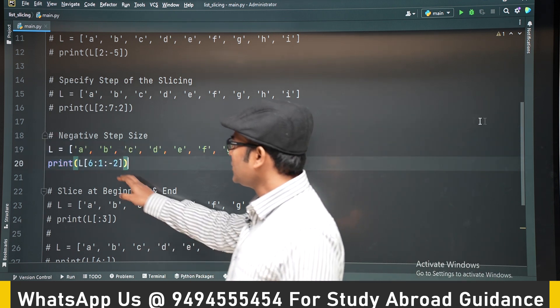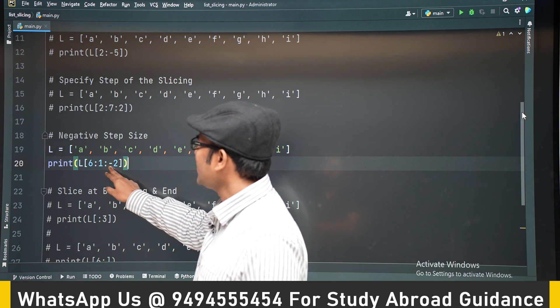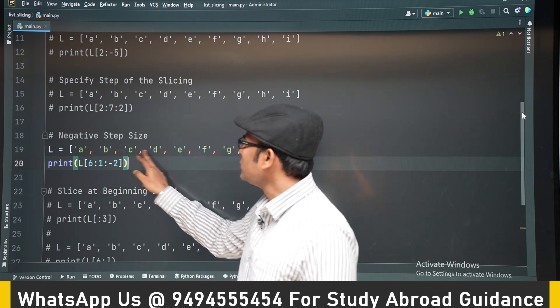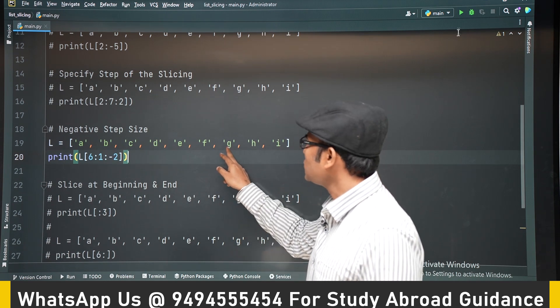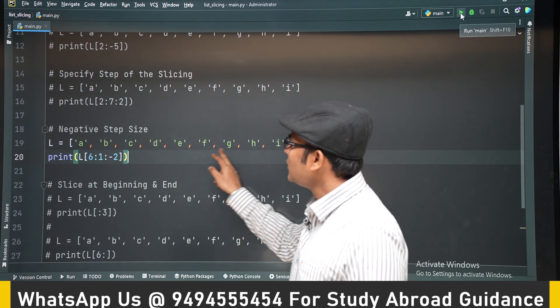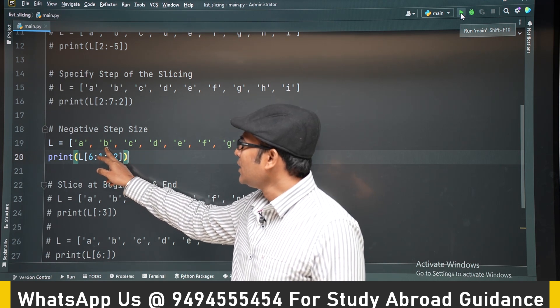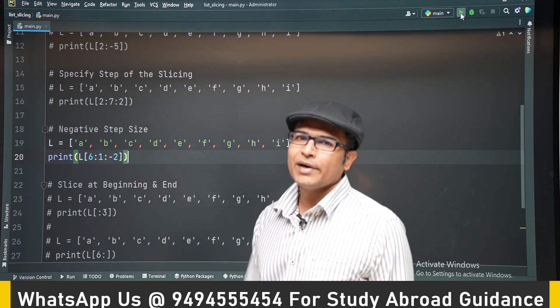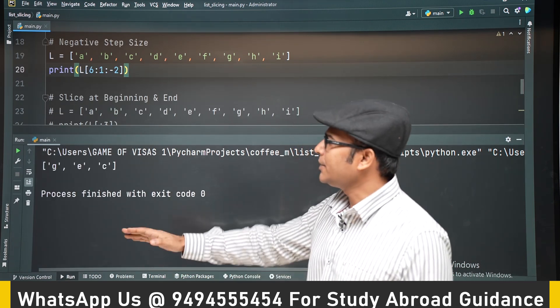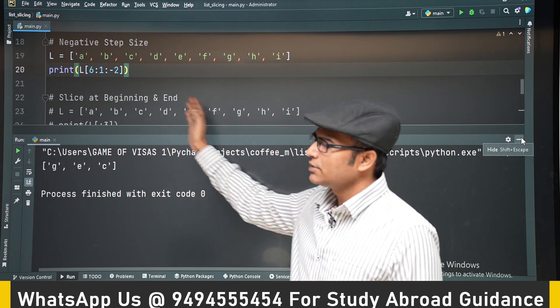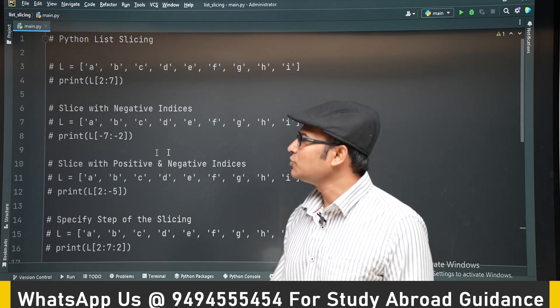Similarly, you can use negative steps. It will start from index 6, which is G, and it will go to 1, which is B without touching B, and it will decrement in steps of minus 2, which means from the end we are coming. So G, E, C from the end it is coming and it is decrementing in steps of 2.